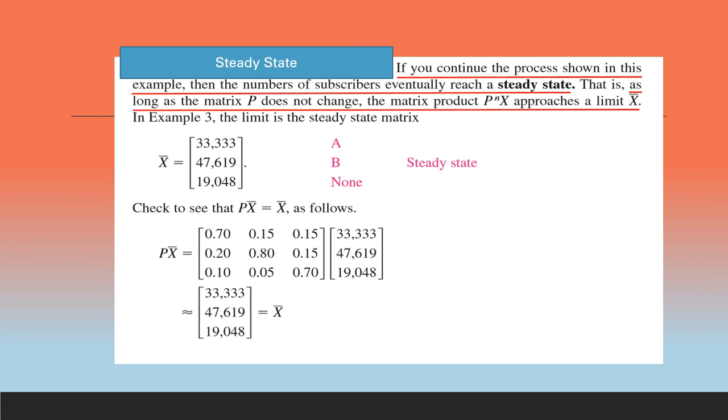We can prepare the table and we can see P raised to 10X already we got. So if we can find P raised to 11X, P raised to 12X, etc., maybe after 13 or 14, it looks like there is a steady state.